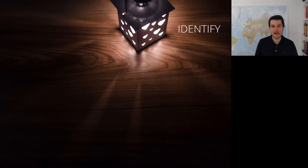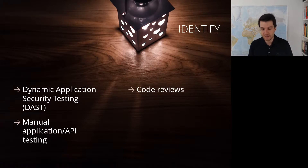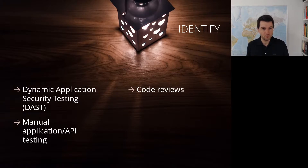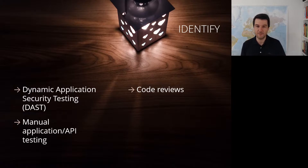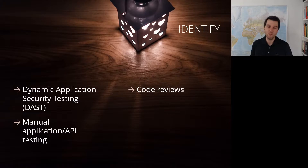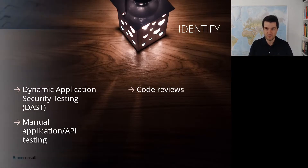How can you identify this vulnerability? Dynamic application security testing is one of the main drivers to find it, but you can also do manual testing of the application and the API. You could also look at the static side — examining the source code to identify vulnerabilities rather than looking at the running application.